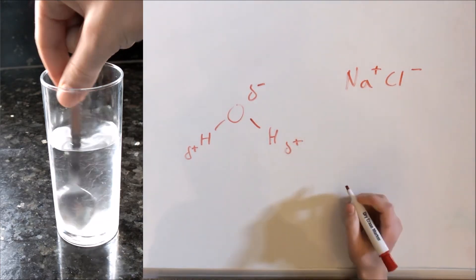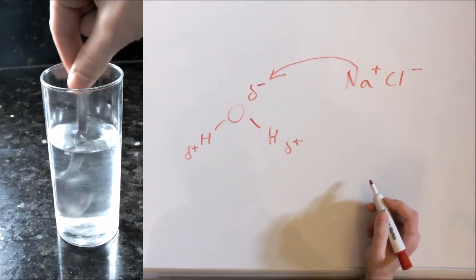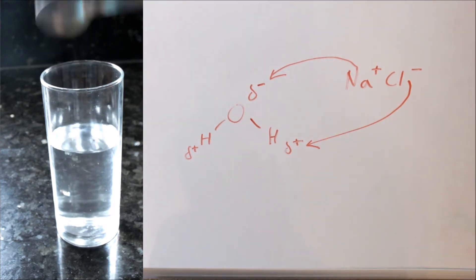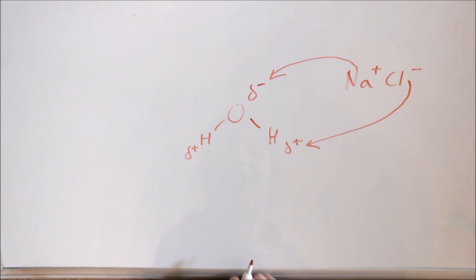The Na plus ion is attracted to the oxygen due to its oppositely negative charge. The chlorine minus atom is attracted to the hydrogen due to its positive charge. These attractions pull the ions from each other.